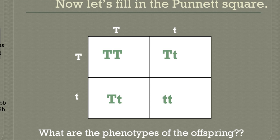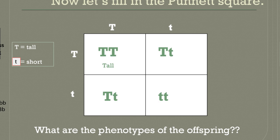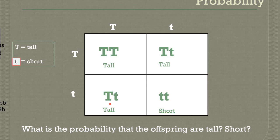Now, what will the phenotypes of these offspring be? Pause the video and take a guess. The big T, big T plants will be tall because capital T is dominant for tall. The big T, small t offspring will also be tall because the dominant allele is stronger — anytime there's a big T, that's the one that will take over, so that organism will be tall. The only ones that will be short are those with two small t's — two recessive alleles. That's the only time we see the recessive trait in the offspring.